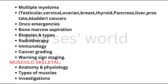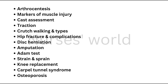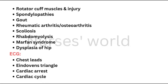Musculoskeletal system — anatomy and physiology, types of muscles, investigations, arthrocentesis, markers of muscle injury. CAST assessment in POP — very important. Traction — also very important. Crutch walking — very very important. Hip fracture and complications, disc herniation, osteoporosis, rotator cuff muscles and injury, spondylopathies, gout, rheumatic arthritis, osteoarthritis, scoliosis, rhabdomyolysis, Marfan syndrome, dysplasia of hip, and hip reduction procedures.